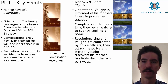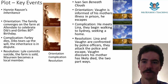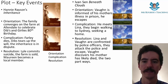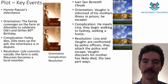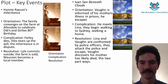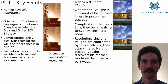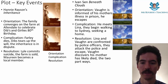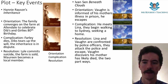For Beneath Clouds: the orientation is that Vaughn is informed of his mother's illness in what's probably a low-level security prison, and he escapes in the milk truck. The complication is when he meets Lena — they both realize they're heading towards Sydney and begin to walk there seeking a home, learning a lot about each other along the way. The resolution is when they're confronted by police, attack them, and escape. Vaughn discovers his mother has apparently passed away or been taken to hospital, and then Vaughn and Lena part ways at the station — an unsatisfying ending.